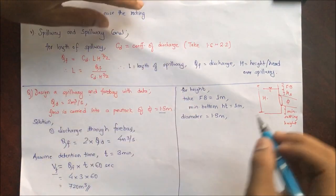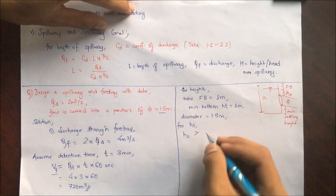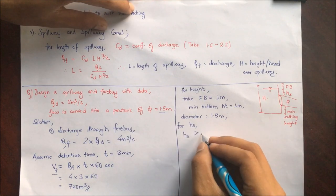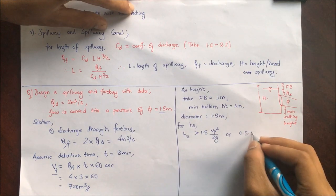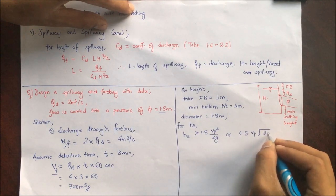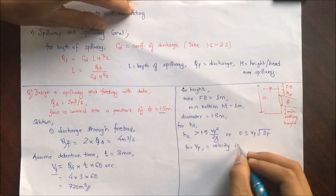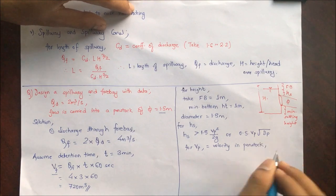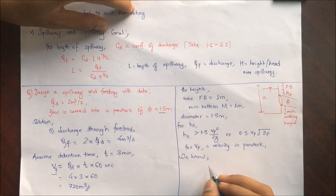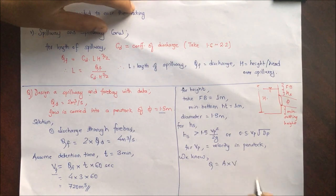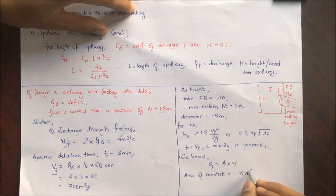For submergence height Hs, we have two conditions: Hs > 1.5 × Vp² / 2g, or Hs > 0.5 × Vp × √Dp, where Vp is velocity in penstock. To find Vp, we use discharge Q = A × V, where area of penstock Ap = π D² / 4, with D being the diameter of penstock equal to 1.5 meter.